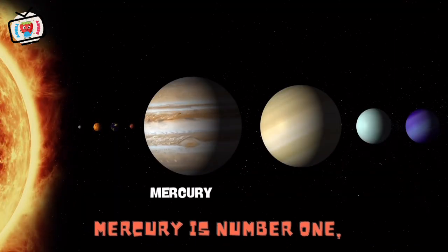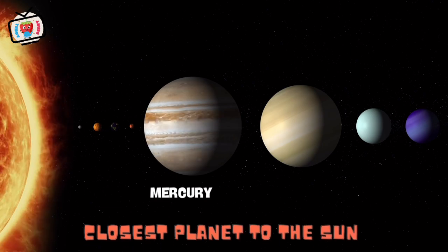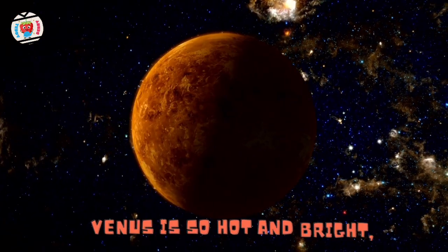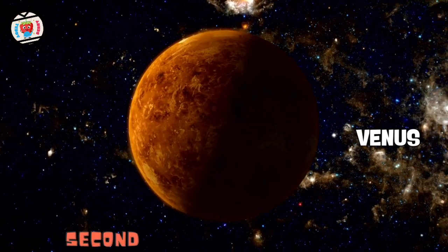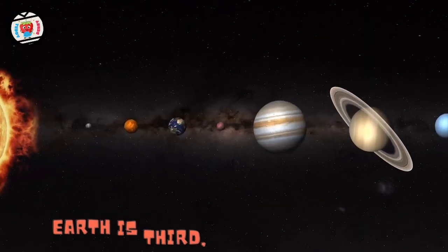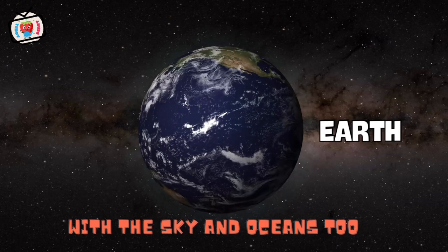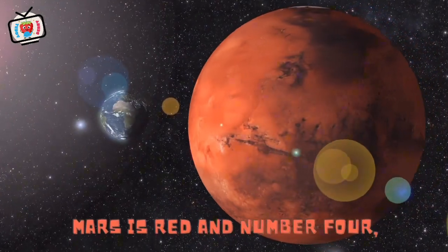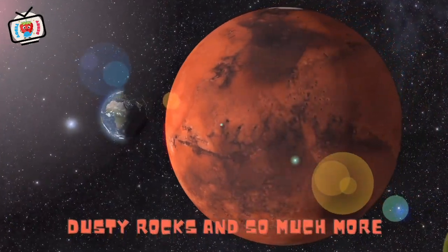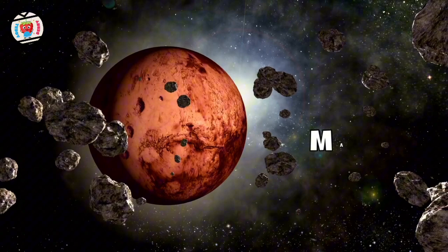Mercury is number one, closest planet to the sun. Venus is so hot and bright, second planet full of light. Earth is third, our home so blue, with the sky and oceans too. Mars is red and number four, dusty rocks and so much more.